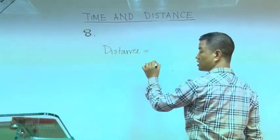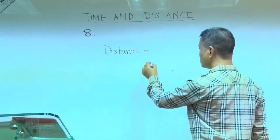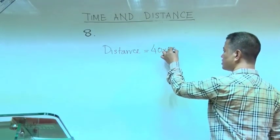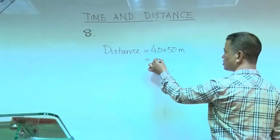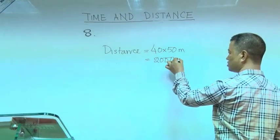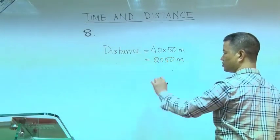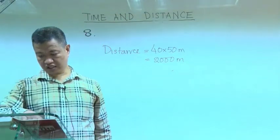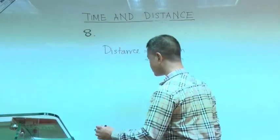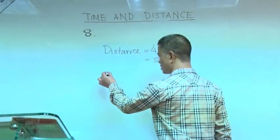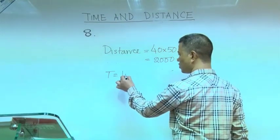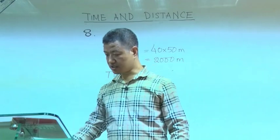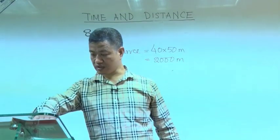Distance between 41 posts is 40 into 50 meters. This is 2000 meters. The time taken is one minute.